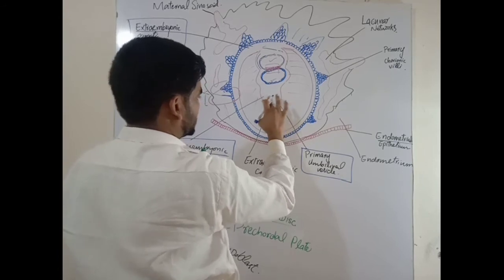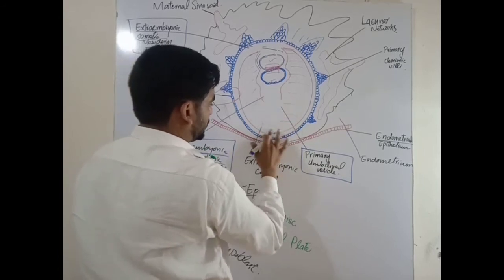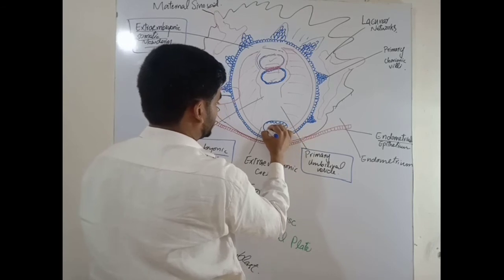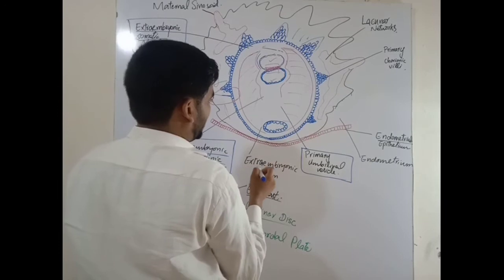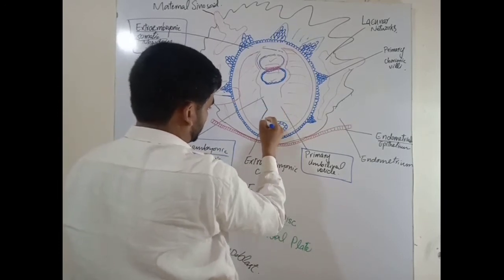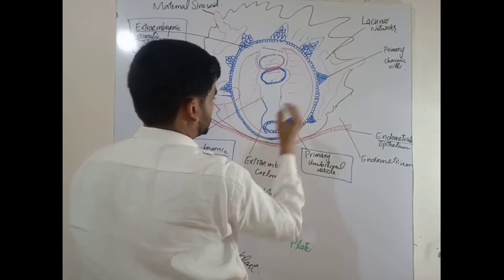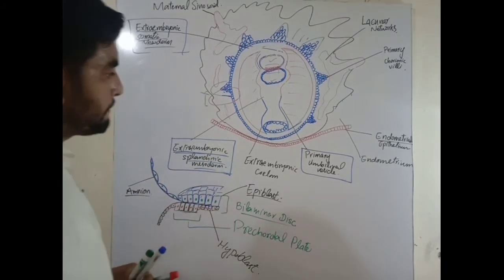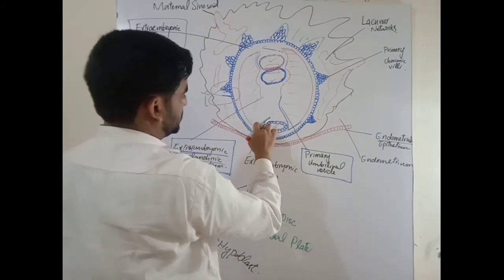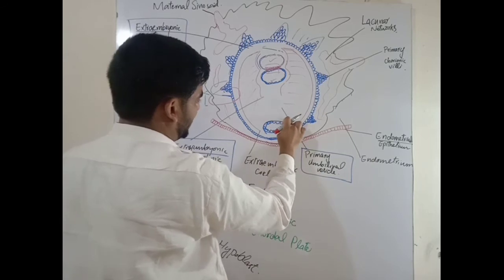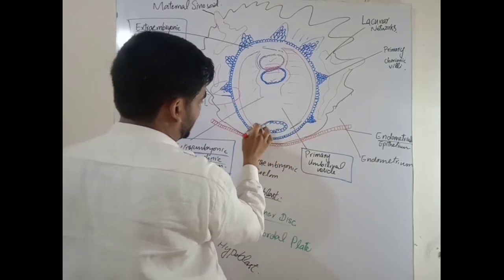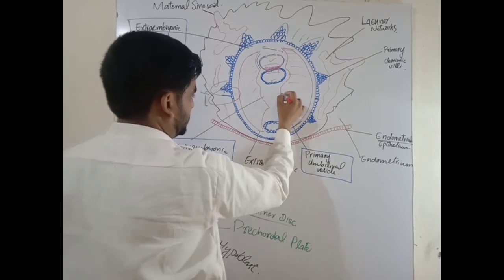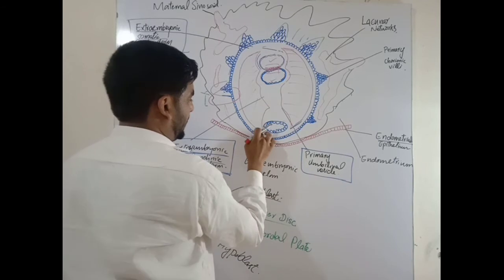Due to the pinching, the primary umbilical vesicle is reduced in size, and the part called the remnant of the primary umbilical vesicle moves away. The extra-embryonic coelom is split, and the primary umbilical vesicle is given off. The extra-embryonic coelom now also surrounds the remnant of the primary umbilical vesicle.